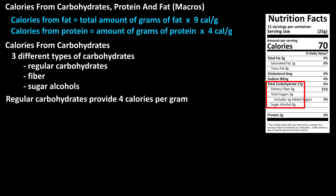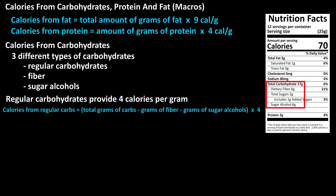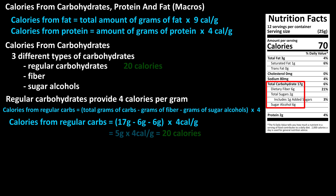Regular carbohydrates provide four calories per gram. So the formula to calculate the number of calories from regular carbohydrates is: calories from regular carbohydrates equals the quantity of total grams of carbohydrates minus the grams of fiber minus the grams of sugar alcohols, times four. From our example nutrition label, we have 17 grams minus six grams minus six grams, which equals five grams of regular carbohydrates. Five grams times four calories per gram equals 20 calories from regular carbohydrates.